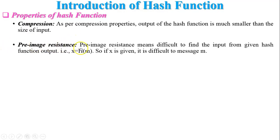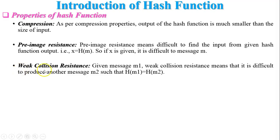Second property: pre-image resistance. Pre-image resistance means it is difficult to find the input from a given hash function output. If a hash function is applied to a message and generates hash value x, then given x, it is difficult to recover message M. This is called pre-image resistance, or we can say it is the one-way property.